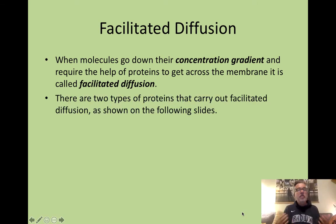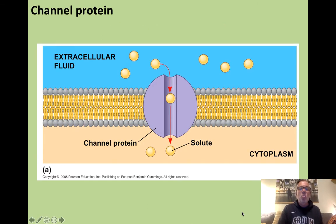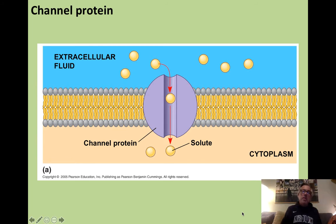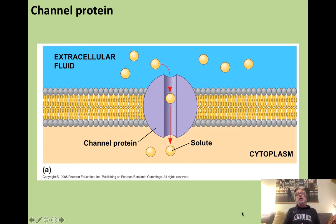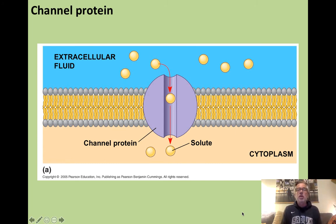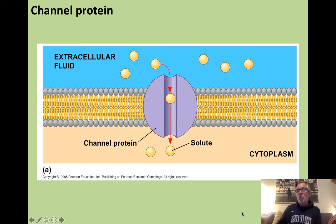There are generally two types of proteins that carry out facilitated diffusion. One are called channel proteins — proteins that have channels running through them that allow certain molecules to pass and others not. One of the most famous types of channel protein are the ones that let water through; they're called aquaporins because they let the aqua, or water, pour in.